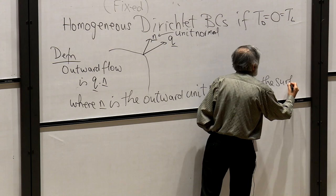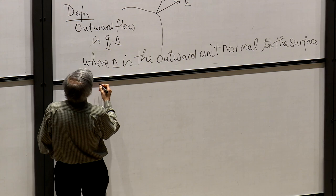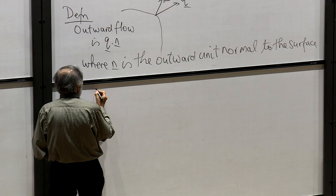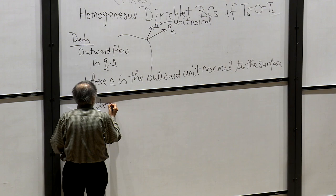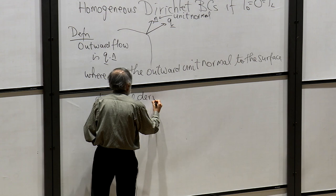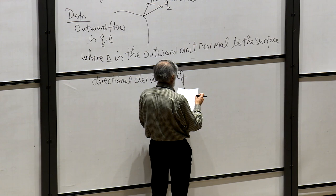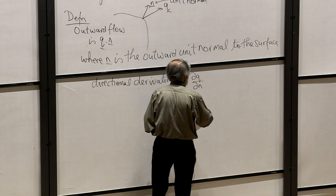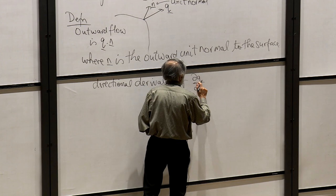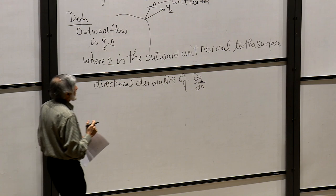So if we have a surface, that's called — so if q has a directional derivative of some vector, say you've got some directional derivative, that's called dq/dn. That's just what is defined as the directional derivative.